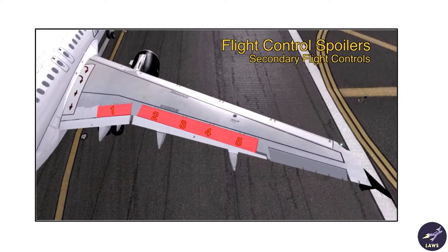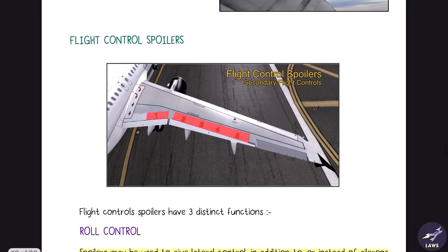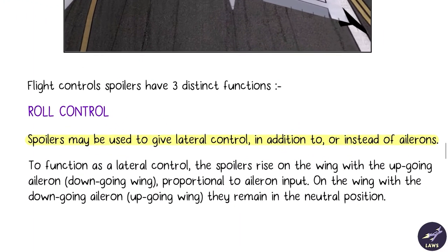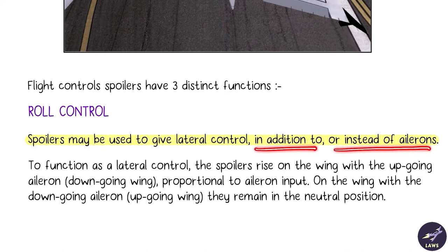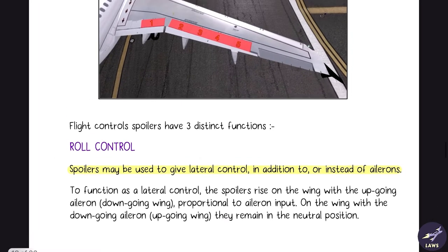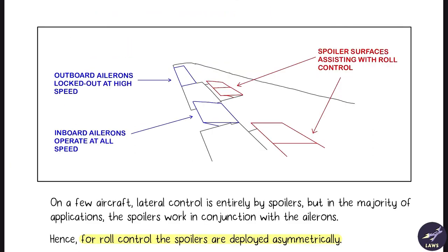These are the flight control spoilers of the A320. They have three distinct functions. The first function is roll control — they are used to give lateral control in addition to, or instead of, ailerons. On larger aircraft like the 777 we have inboard ailerons used at higher speeds, whereas on aircraft like the A320 there are no inboard ailerons, so roll control spoilers are used at higher speeds instead.